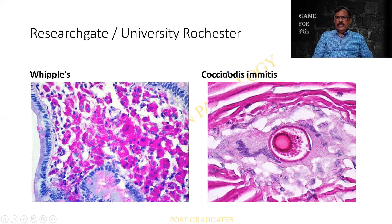And Coccidioides immitis — this is the sporangium with the spores, which is again positive. The sources are given — ResearchGate and University of Rochester. Beautiful pictures. And maybe in the background I am able to see a giant cell that is engulfing the entire sporangium with spores.